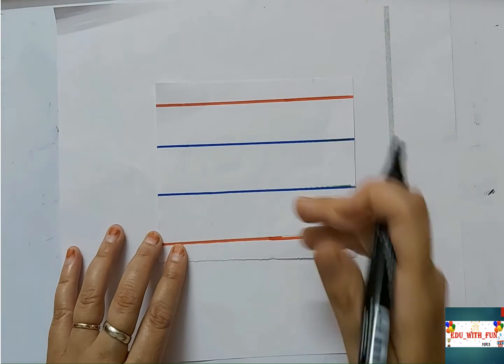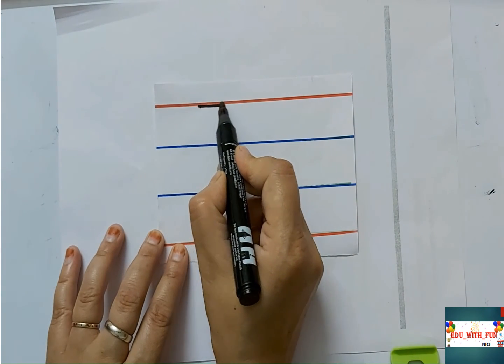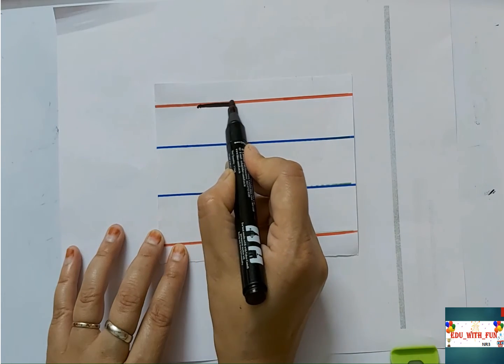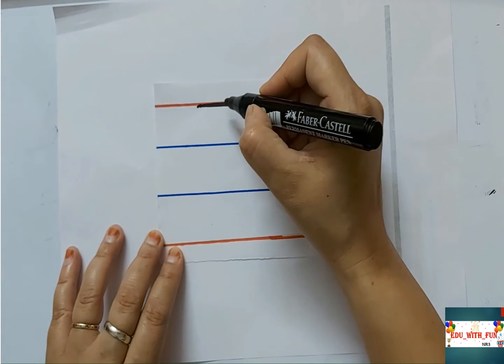For writing capital letter J, draw a sleeping line on first red line like this. Now draw a standing line which comes from first red line towards the third blue line.